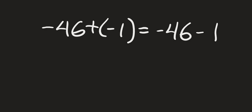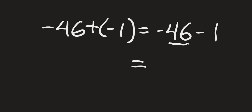Now I'm going to give you another way to think about these integers, using the same example of negative 46 plus negative 1. We rewrite it as negative 46 minus 1. Next, ask yourself: do these two numbers have the same sign in front or different signs? Both 46 and 1 have a negative sign, so they have the same sign. Whenever you have numbers with the same sign, you add the two numbers together — 46 plus 1 is 47 — and keep the sign that both share, giving negative 47.